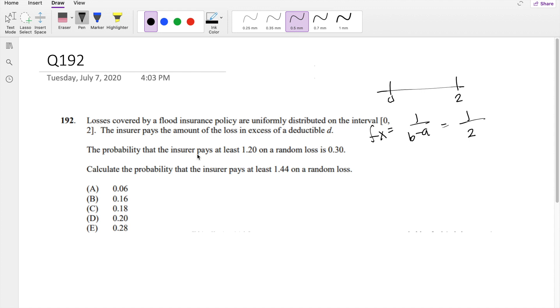They're saying the probability that the insurer pays at least 1.2 on a random loss is 0.3. So we know that for an insurance company, from 0 to D, they don't pay anything, right? They pay zero dollars. But from deductible to the end, they pay whatever the loss is minus deductible. So they pay x minus D.